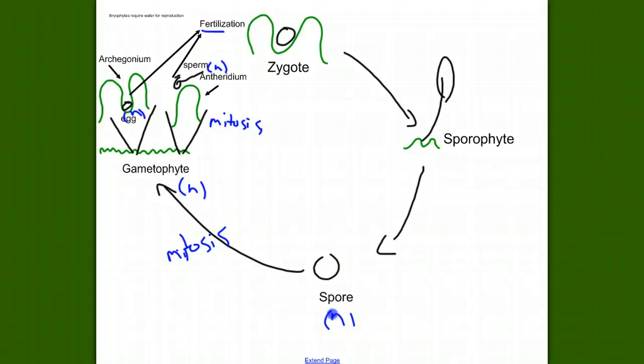They make those gametes by mitosis. Fertilization is the fusion of two gametes. So, the ploidy of a zygote is diploid. That zygote grows up to be a sporophyte, and it grows by mitosis. So, the sporophyte is also diploid. But the sporophyte, which is diploid, makes a haploid spore. So, we need a round of meiosis to produce the spores.